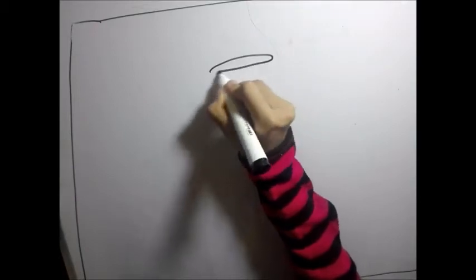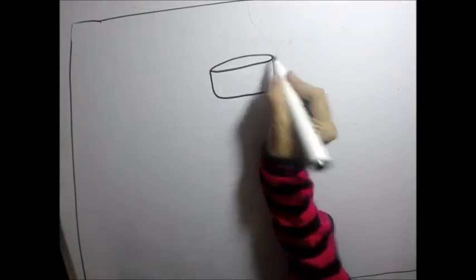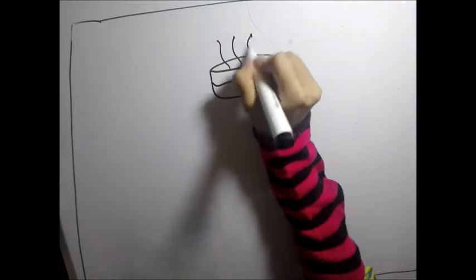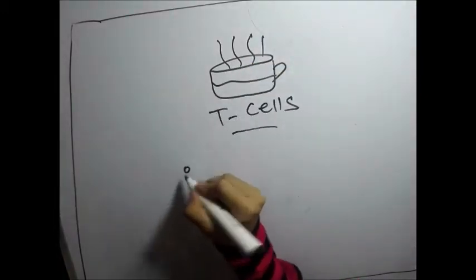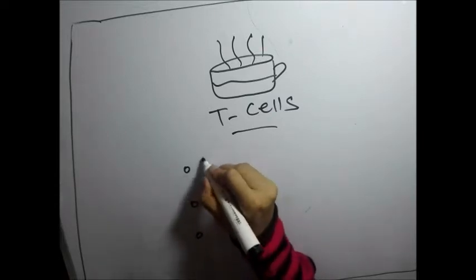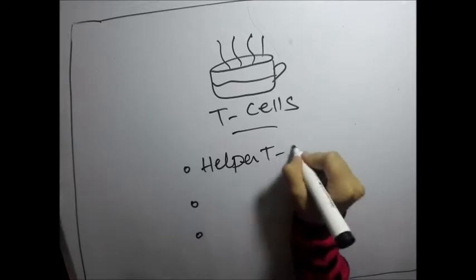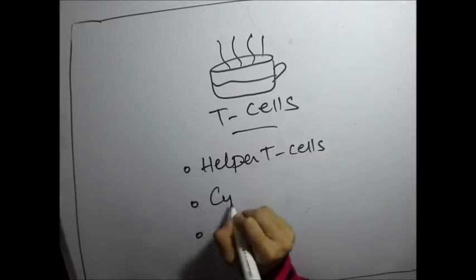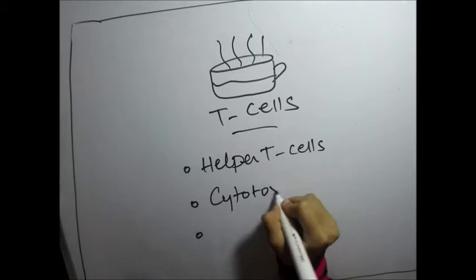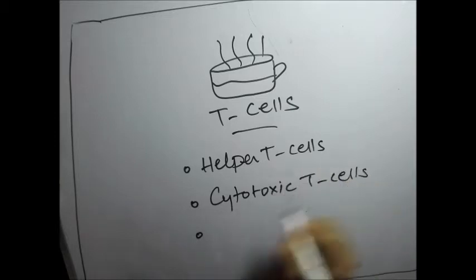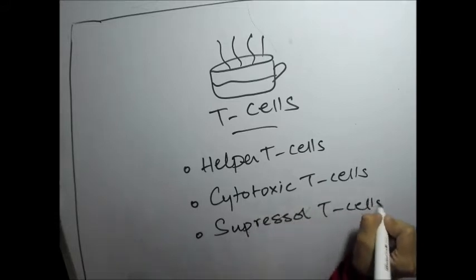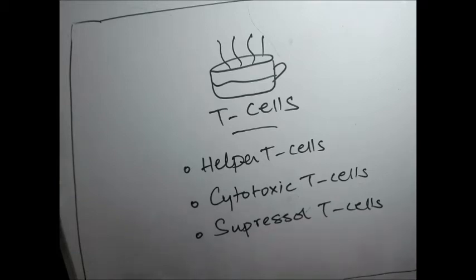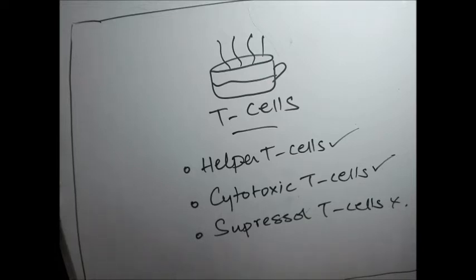T-cells have three types: Helper T-cells, Cytotoxic T-cells, and Suppressor T-cells. Helper and Cytotoxic T-cells have important roles, while Suppressor T-cells have no special role in this context.